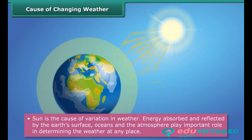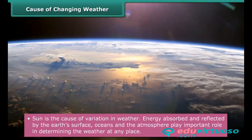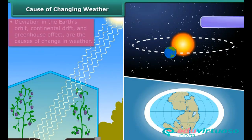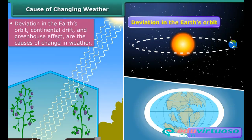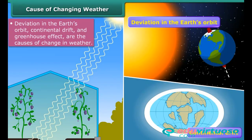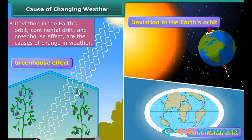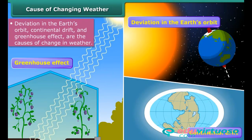The atmosphere plays an important role in determining the weather at any place. Also, deviation in the earth's orbit, continental drift, and the greenhouse effect are additional causes of changes in weather.